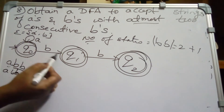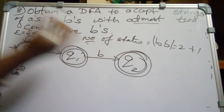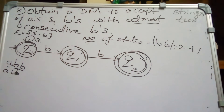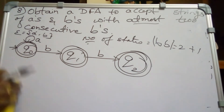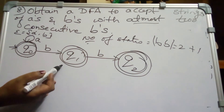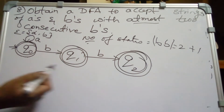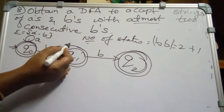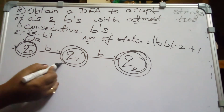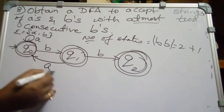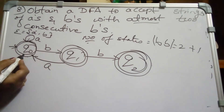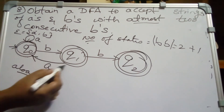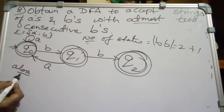So if the input is A, AB, or ABB the string is still accepted since Q0, Q1, and Q2 are all final states. Q1 also has input symbol A. For Q1 on A: if the string is ABA it must be accepted, so Q1 on A moves back to Q0.